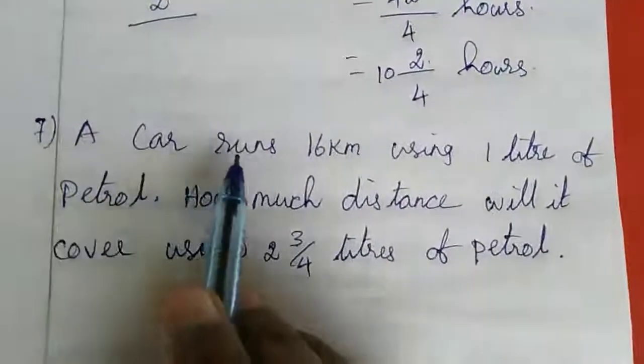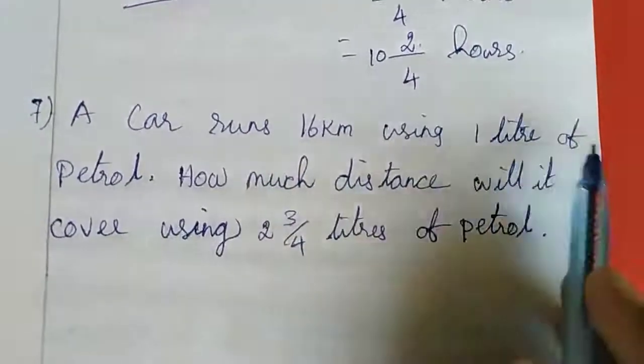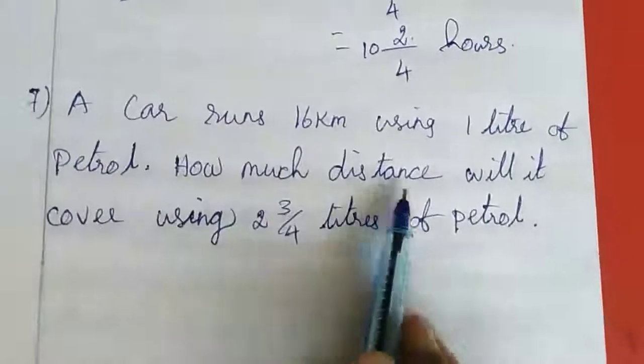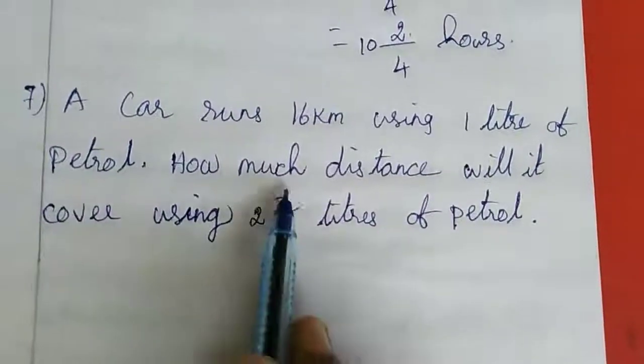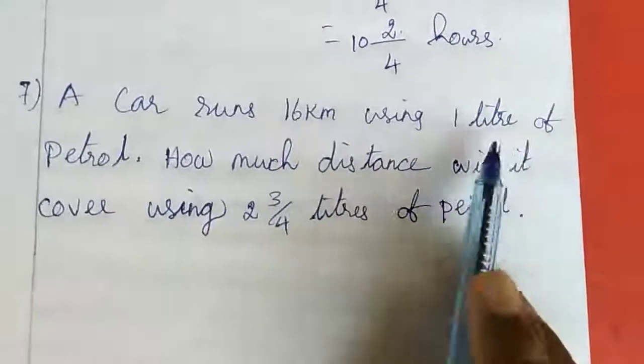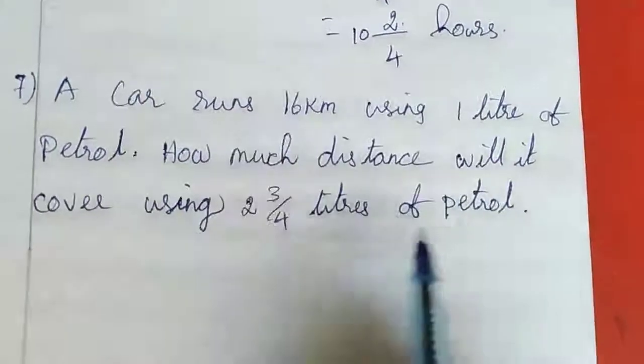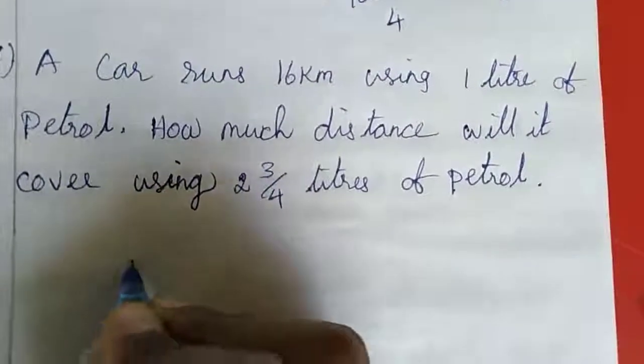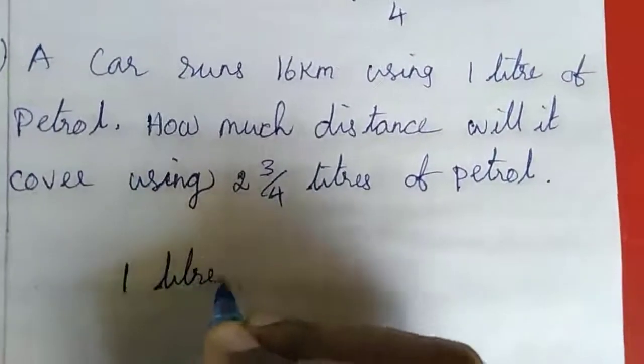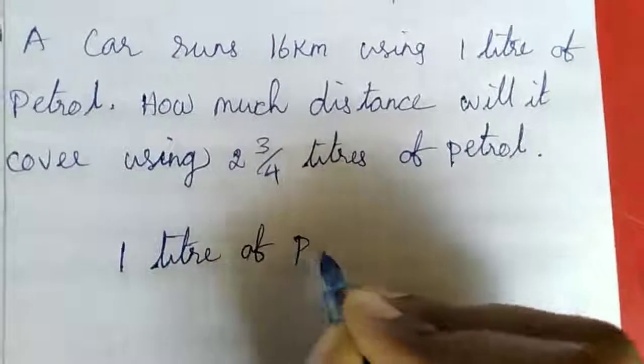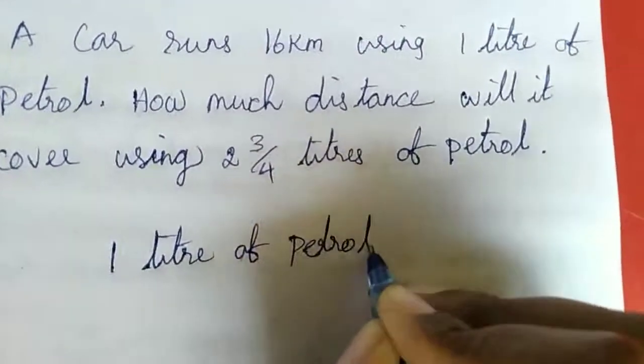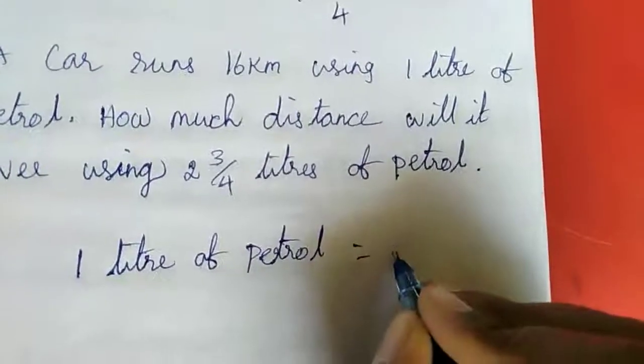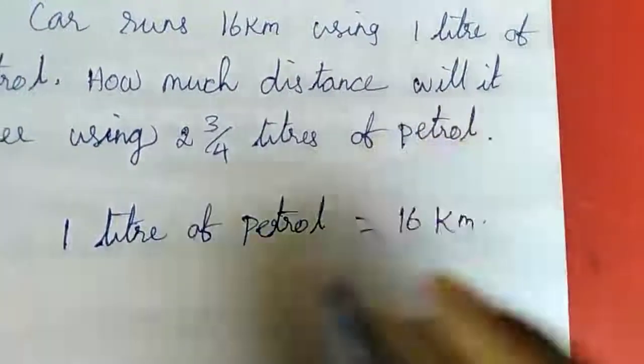7th sum: A car runs 16 kilometer using 1 liter of petrol. How much distance will it cover using 2 and 3 by 4 liter of petrol? 1 liter of petrol is 16 kilometer.